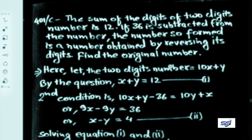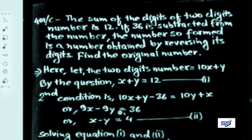The number is 10x plus y and its digits are x and y. If the digit is reversed, x takes the place of y and y takes the place of x, so it becomes 10y plus x. Simplifying: 9x minus 9y equals 36, or x minus y equals 4. Let this be equation 2.